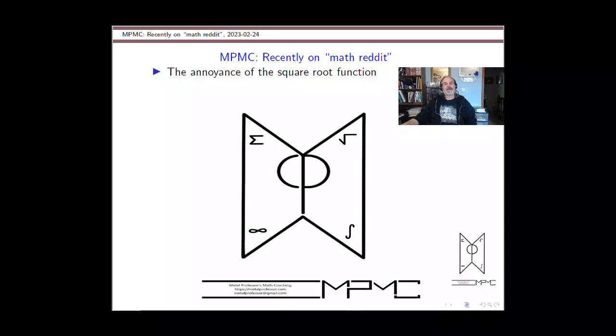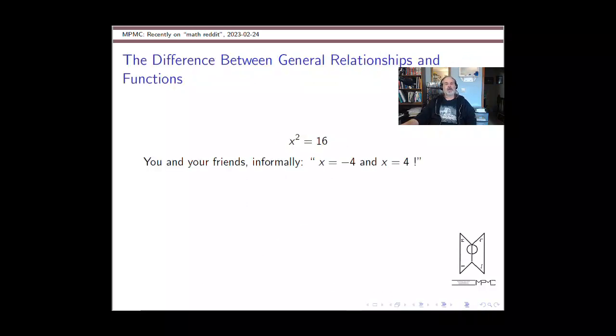The story in the thread was about the annoyance of the square root function, or rather how sometimes we throw around a square root and get two numbers returned, one positive, one negative, and other times we don't. The fundamental difference between this situation is whether you're just thinking about general numerical relationships or getting more technical into the language and usage of functions, which are more tightly controlled.